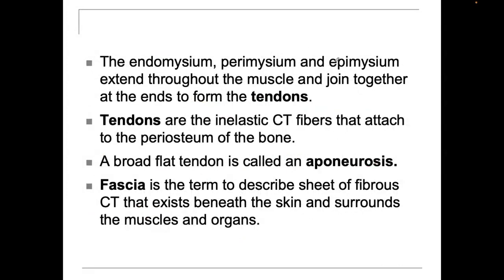The endomysium, perimysium, and epimysium extend through the muscle and join at the end to form tendons. One end is going to be an origin and the other is going to be an insertion. The origin attaches to bone more proximally. The insertion attaches to bone more distally. Origin stays still; insertion moves.